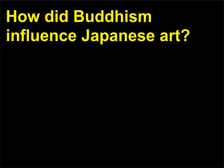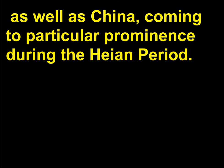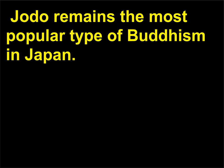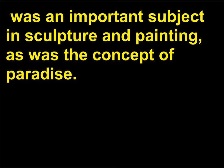How did Buddhism influence Japanese art? Pure Land Buddhism — Jodo in Japanese — was the primary form of Buddhism in Japan, as well as China, coming to particular prominence during the Heian period. Jodo remains the most popular type of Buddhism in Japan. The Amitabha Buddha, known in Japan as Amida Buddha, was an important subject in sculpture and painting, as was the concept of paradise.